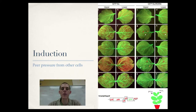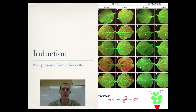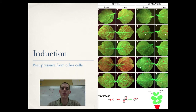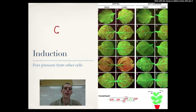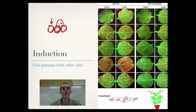Another strategy that cells use to signal what they are to become is called induction — kind of like peer pressure from other cells. Cytoplasmic determinants inside the cell tell it what it's going to become. Once those cells start to become differentiated, they can exert signals to the cells next to them. This might look like signaling through cell membrane receptors or sending out growth factors, causing neighboring cells to start to become the same type of cell. For example, if you have a brain cell here and two undifferentiated cells next to it, the brain cell could send signals causing them to also become brain cells. That would be induction.